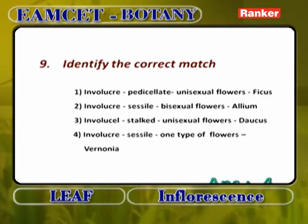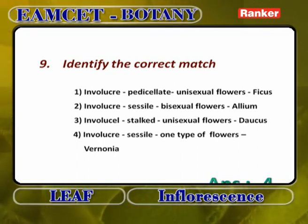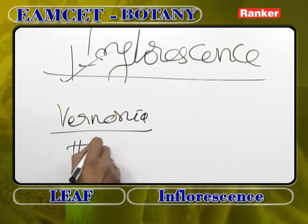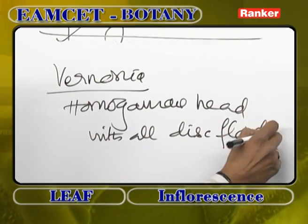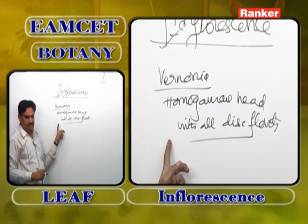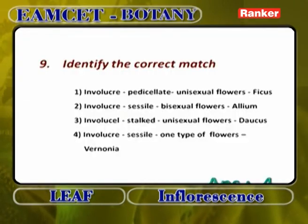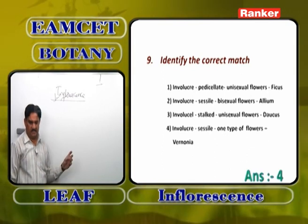Identify the correct match: involucre with pedicellate unisexual flowers in ficus — involucre with sessile bisexual flowers in allium — involucre with stalked unisexual flowers in dolichous (wrong). Involucre, sessile, one type of flowers is Vernonia — a homogamous head with all disc florets. Head means involucre is present and flowers are sessile. In Vernonia, only disc florets are present. So the correct match is option 4.